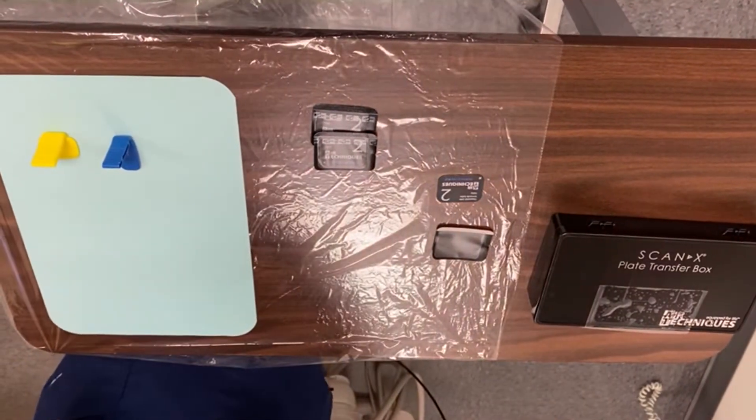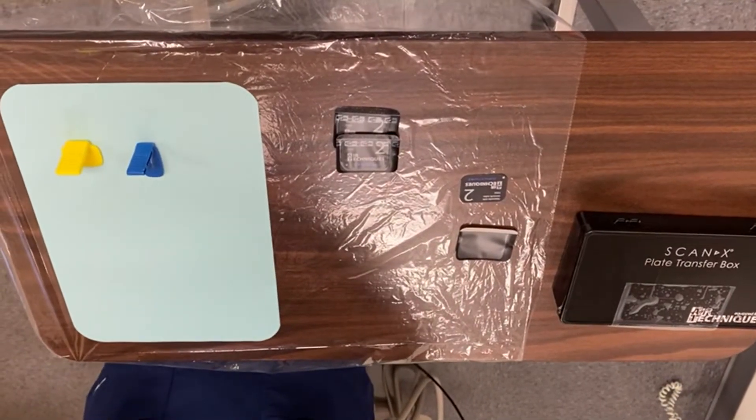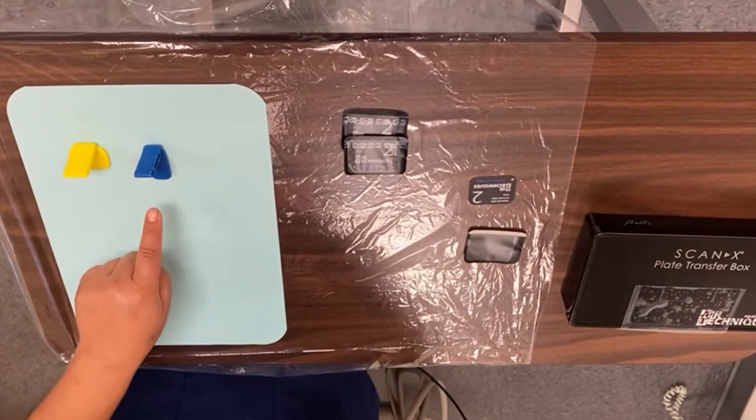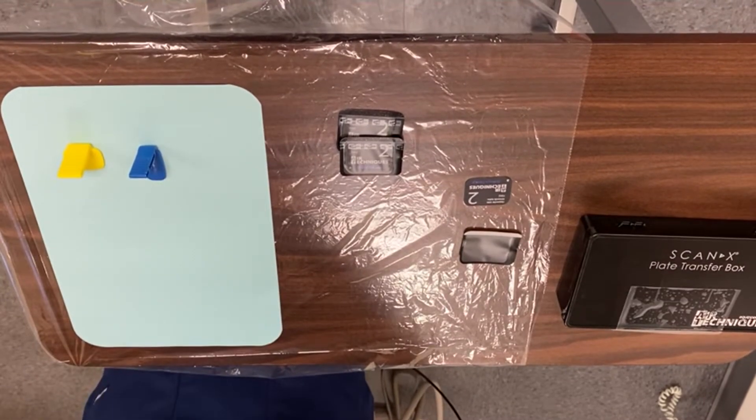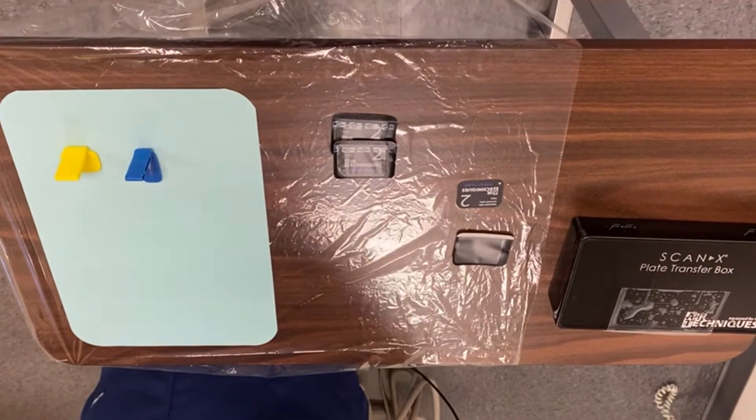From there, we need the bite blocks, also known as the foam holders, to take whatever x-ray we need, whether it's an anterior PA or a posterior PA.